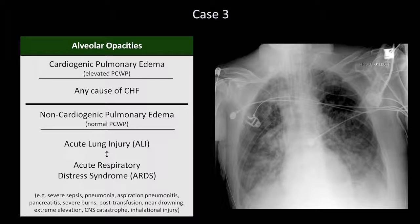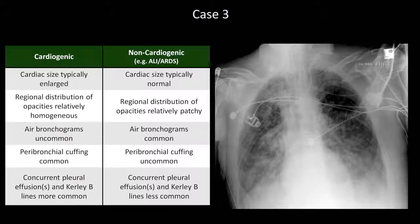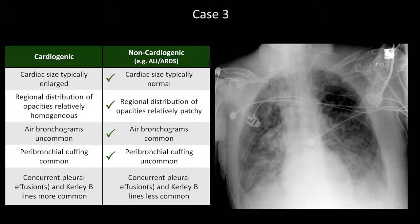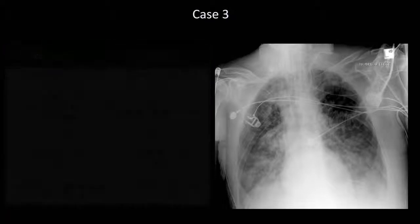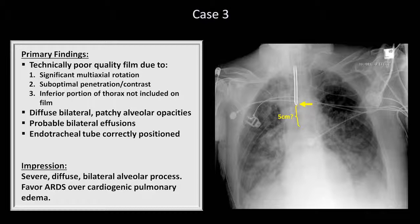So how can we tell the difference between cardiogenic and non-cardiogenic edema? Here's a chart from Lesson 7 outlining those differences. In the case of this x-ray, the cardiac size is normal, the regional distribution of opacities is patchy, we can see an air bronchogram right here, and there isn't any parabronchial cuffing. Since there are probably pleural effusions but no obvious curly B lines, that gets split down the middle. Overall, it should be clear that this is most likely non-cardiogenic pulmonary edema, most likely from ARDS in the setting of severe sepsis. Finally, there is the issue of the endotracheal tube. The tip of the tube should be placed about 5 centimeters away from the carina, and it's probably about right.